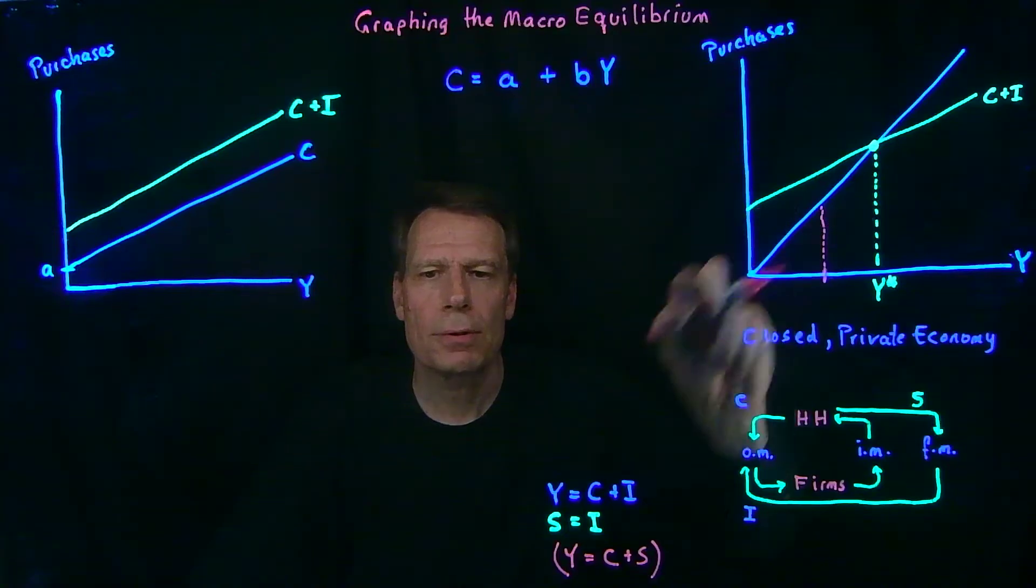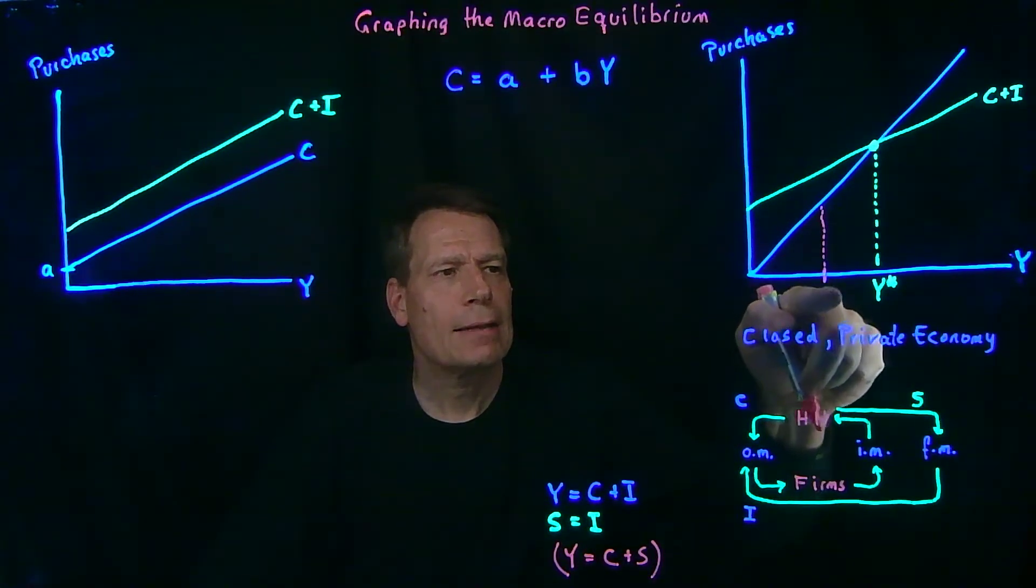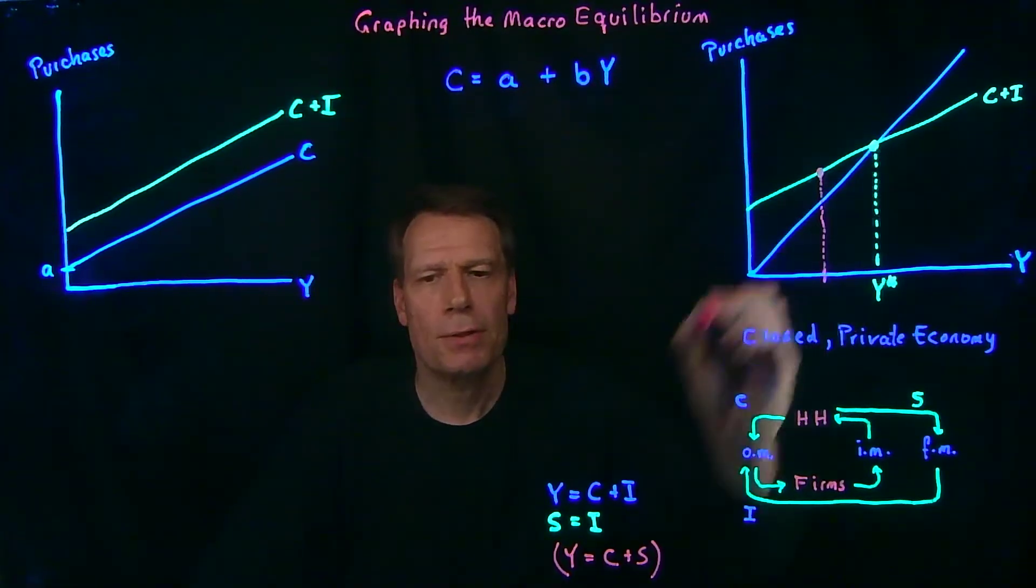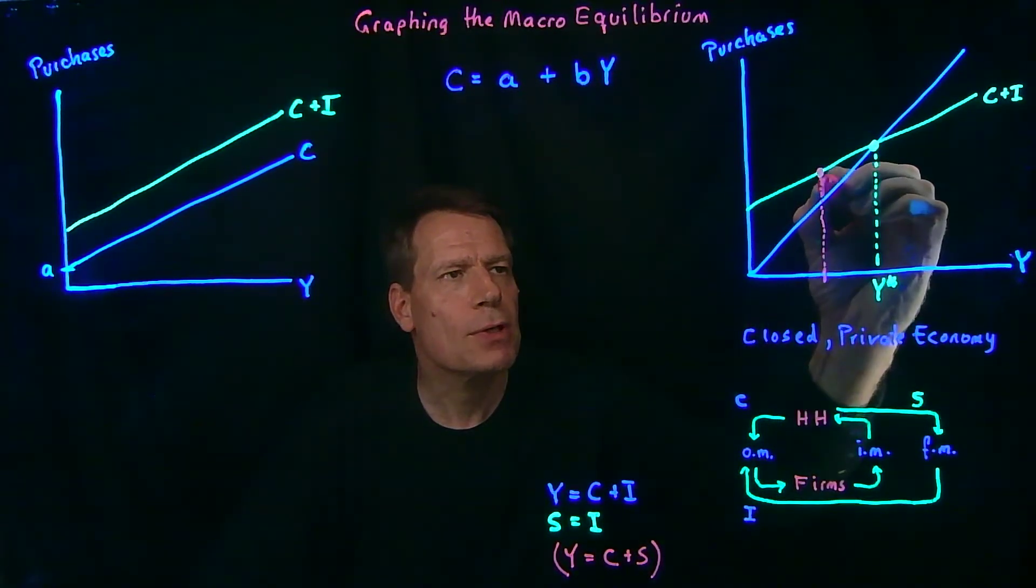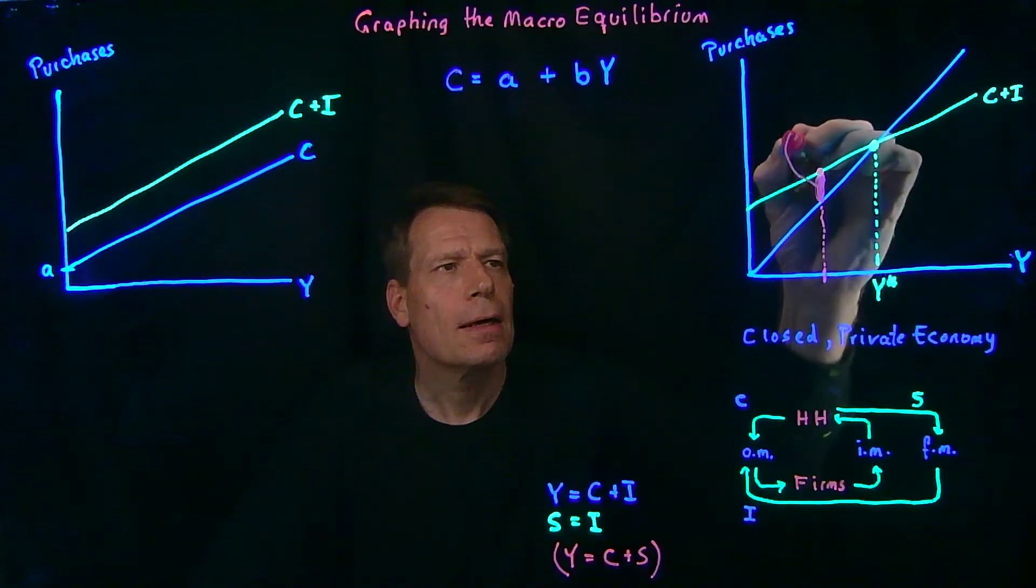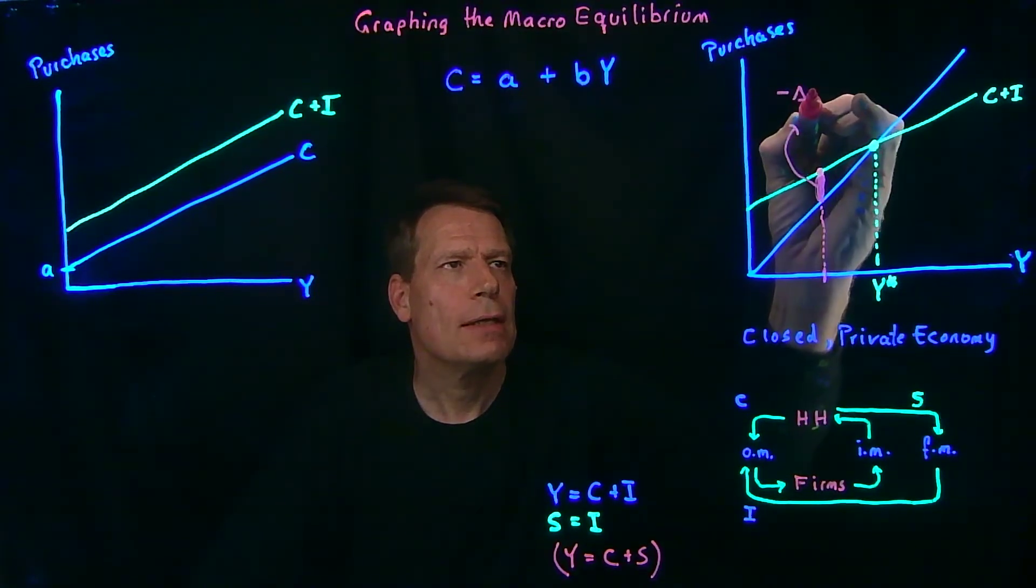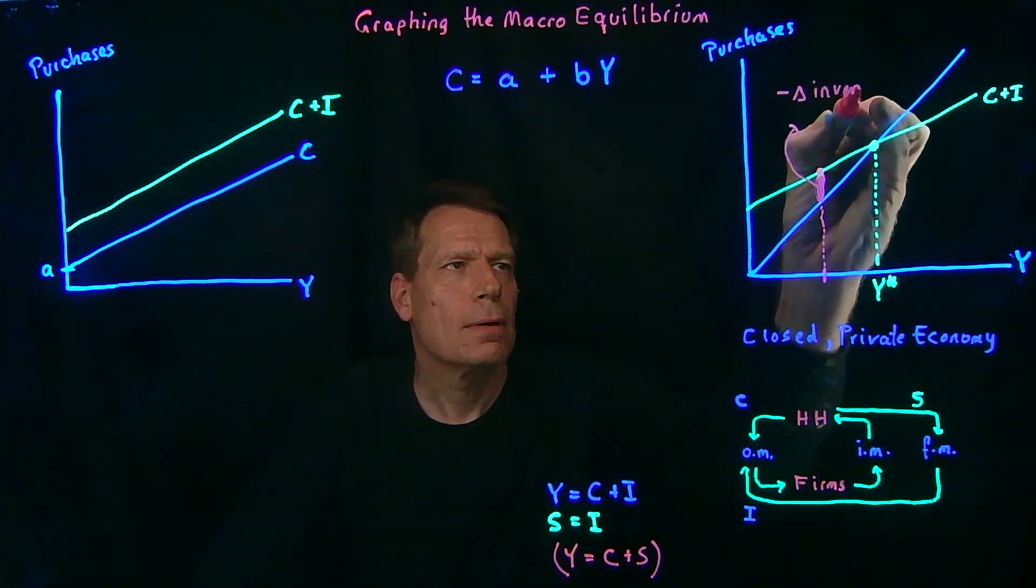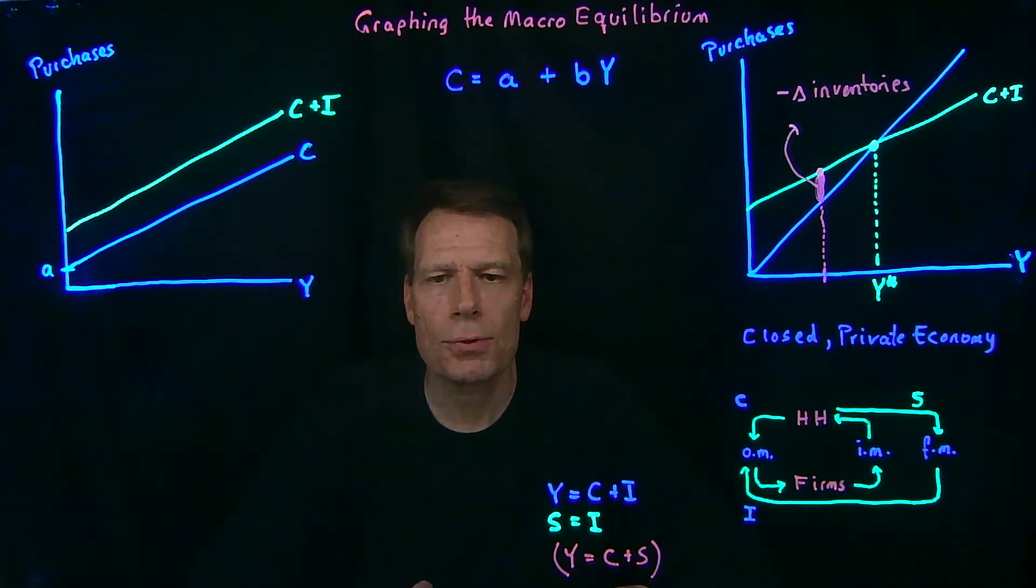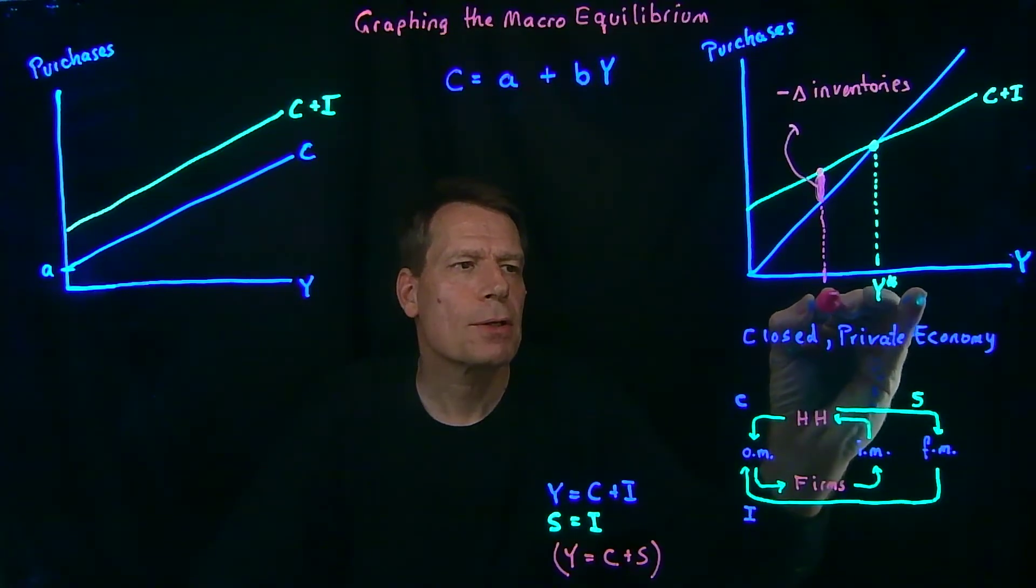That's how much is being produced. But at that income level, consumers and businesses are purchasing this much. In other words, they're purchasing this much more, this vertical distance more than what's being produced. If more is being purchased than what's being produced, then inventories must be falling. And when inventories fall, businesses will increase production.